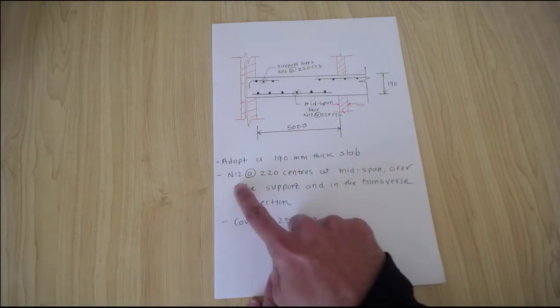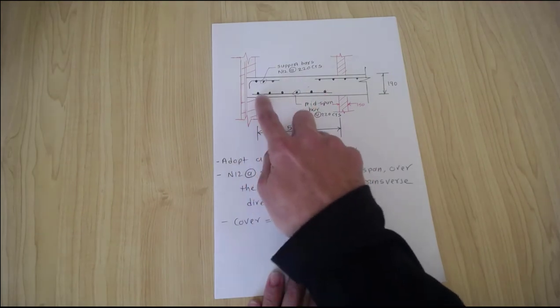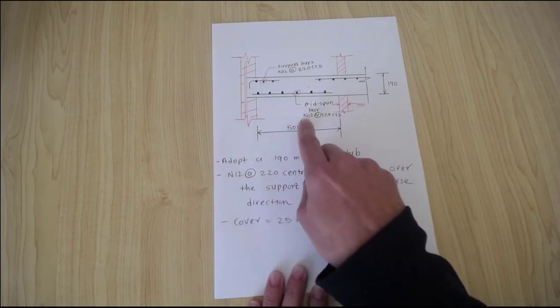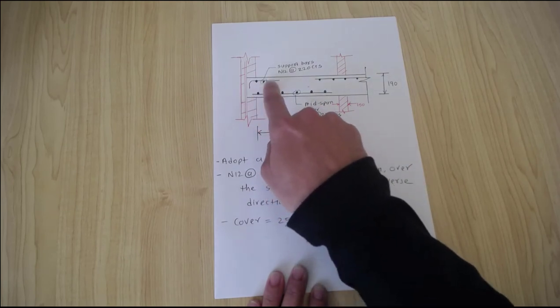We are providing N12 at 220 center to center distance at the midspan. These are the primary reinforcement and these are the secondary reinforcement.